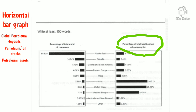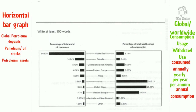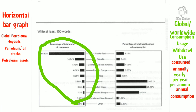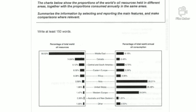Then further we have the percentage of total world annual consumption — worldwide usage or withdrawal — which is consumed annually or per annum. All areas of the world are given with both consumption and stocks in percentage. The task statement says: the charts show the proportions of the world's oil resources held in different areas, together with the proportions consumed annually in the same areas. Summarize the information by selecting and reporting the main features, and make comparisons where relevant.